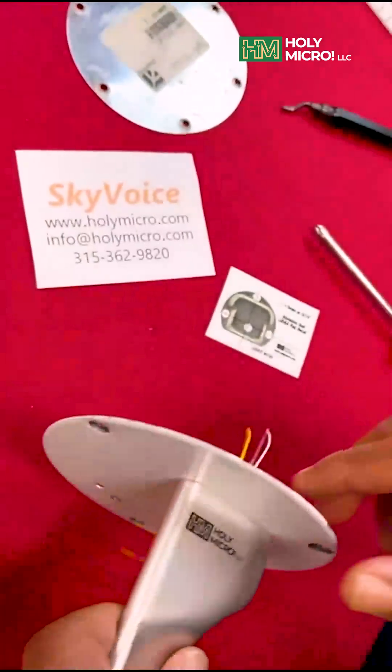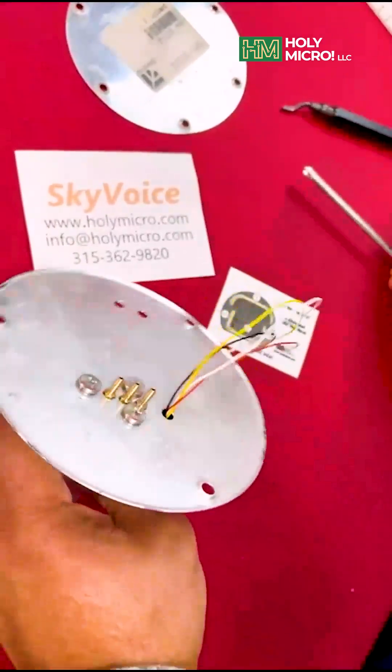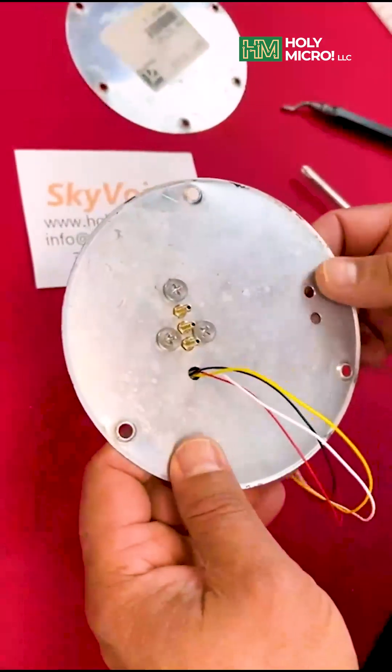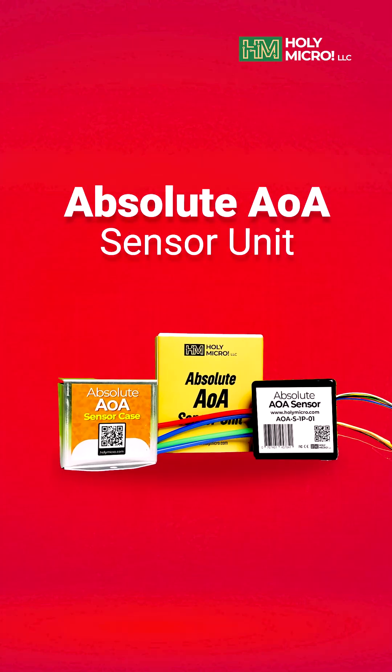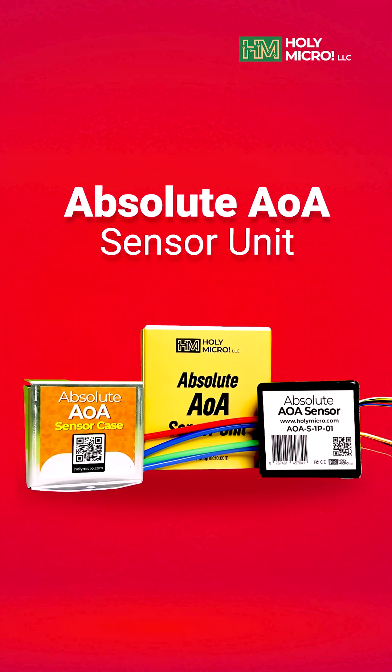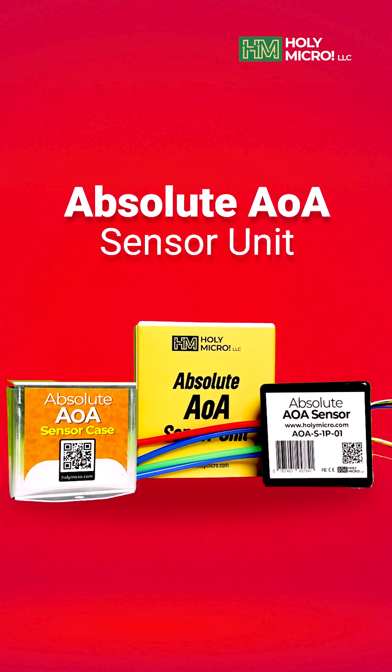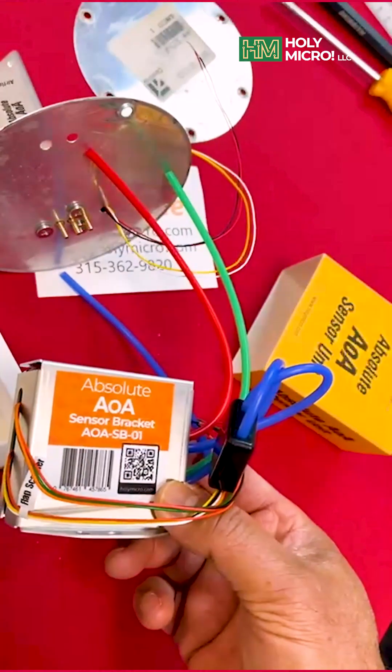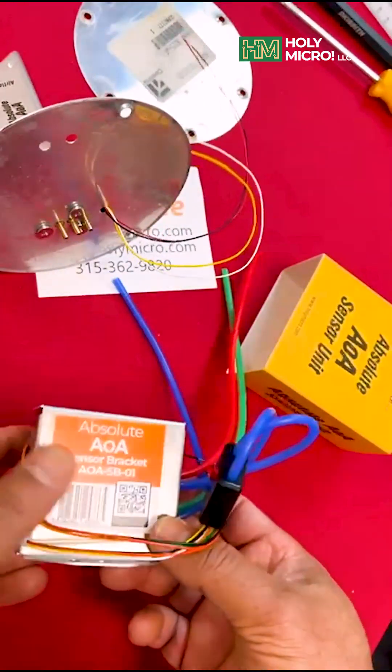We're going to assume you have already secured the absolute AOA probe itself to the inspection plate. The absolute AOA sensor unit is shipped fully assembled and sealed inside its protective box. This box is then mounted inside an aluminum mounting bracket.